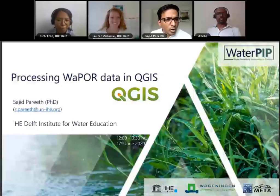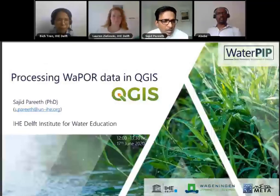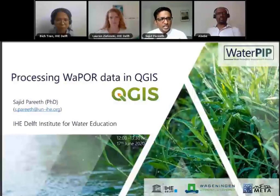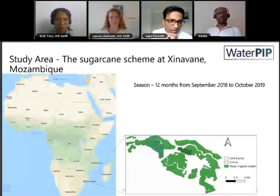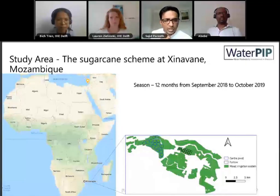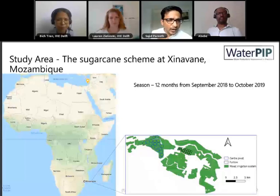Hello everyone. I will continue from where Bic stopped. I will show you how to process WAPOR data downloaded for a particular study area and how to compute some of the performance indicators in QGIS. The study area — which will be the focus of following presentations as well — is the sugarcane scheme at Sinawane in Mozambique. The season we will consider is 12 months, from September 2018 to October 2019. In this session I will focus on one season in the crop year 2018–19.